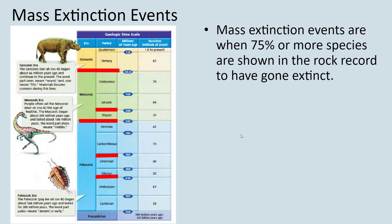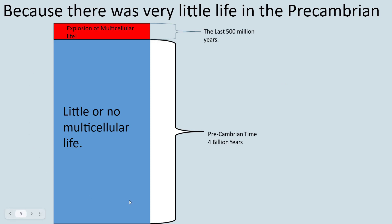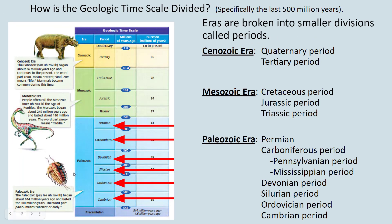The big takeaways about the geologic time scale: first, the early part — the Precambrian, from about 550 million years ago to the start of Earth — didn't have much multicellular life. Earth processes were making the crust, oceans, and atmosphere. The more interesting part of the geologic time scale is the last 550 million years, when we see this big explosion in life. Second, that last 500 million years is split into three eras — Paleozoic, Mesozoic, Cenozoic — and each era is split into shorter periods.